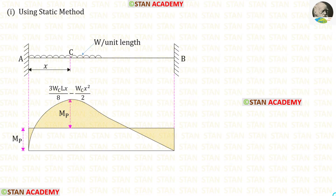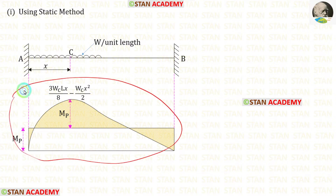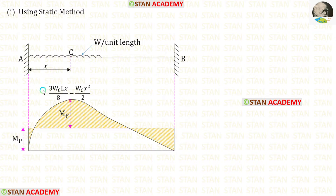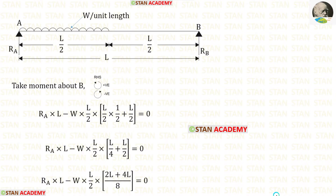First, let us use the static method. This is the bending moment diagram during collapse. To find this ordinate, we have to consider this beam as a simply supported beam. Here I have considered a simply supported beam with the UDL for the first half span.